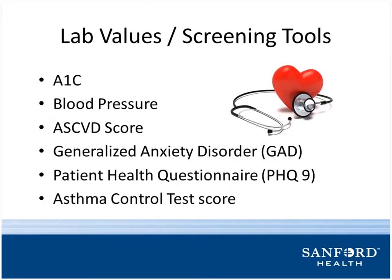We pull in different lab values — looking at hemoglobin A1C, the patient's blood pressure, and the cardiovascular risk score. Some of our screening tools include the GAD and the PHQ-9, where we send questionnaires to patients to look at their anxiety level and depression scores. We also pull in their asthma control test — the ACT score.